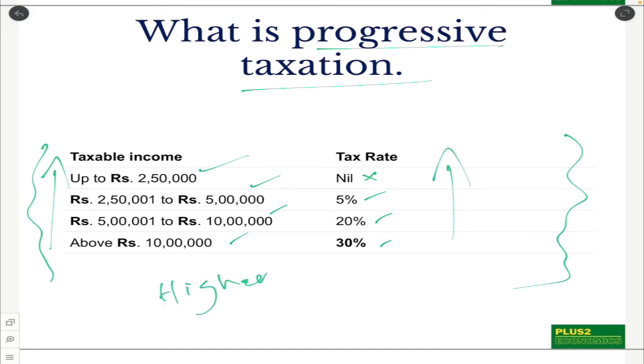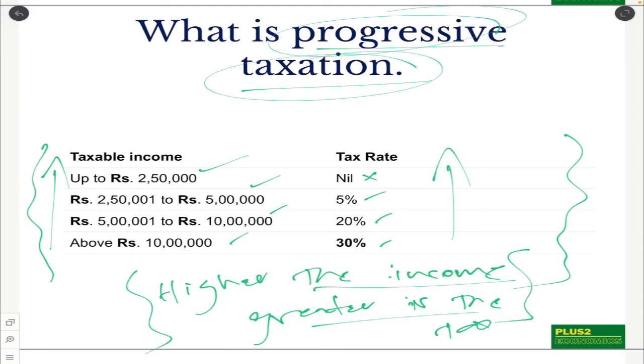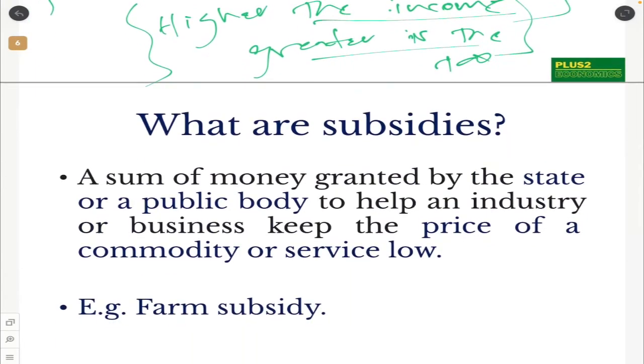So what does it mean? It means that higher the income, greater is the tax. So this kind of a taxation is called progressive taxation. Higher the income, greater is the tax. So that is progressive taxation. Indian income tax system is progressive in nature. If you earn more, you pay higher income tax. This is to be remembered.